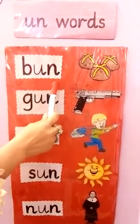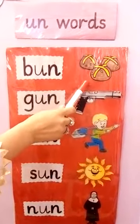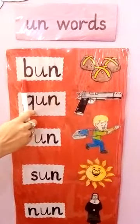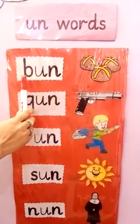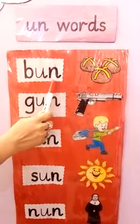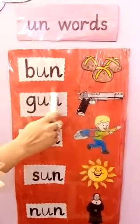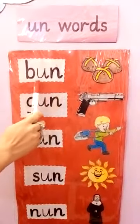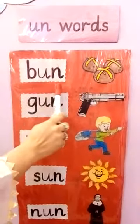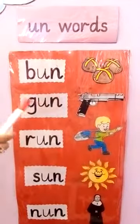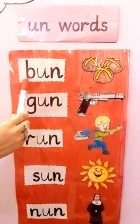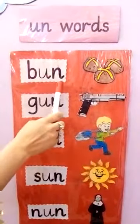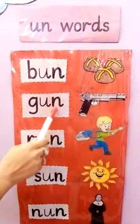Let's start with the first picture. What is this? Bun. Let's spell the word bun with me. B-U-N, Bun. Say it with me everyone. B-U-N, Bun. Now you all have to repeat again with me. B-U-N, Bun. Very good my friends.